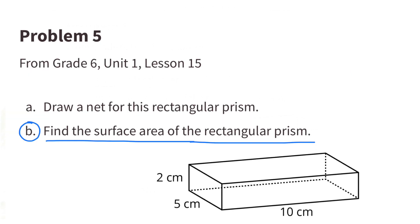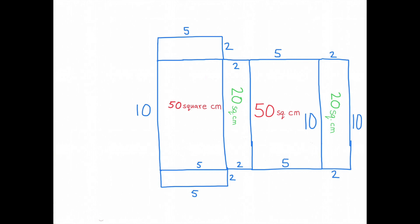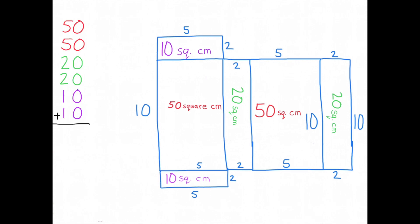B: find the surface area of the rectangular prism. The surface area of the top is 50 square centimeters, the bottom is 50 square centimeters, the front and back are 20 square centimeters each, and the right and left sides are 10 square centimeters each. The total area of all sides combined gives the surface area of the rectangular prism: 160 square centimeters.